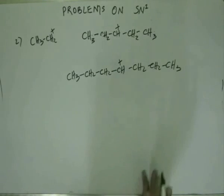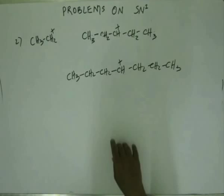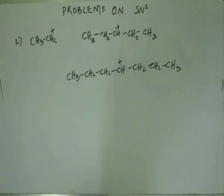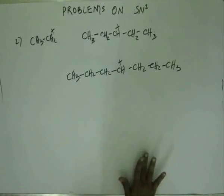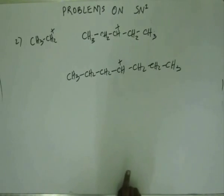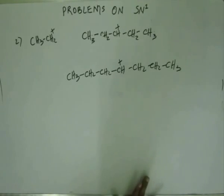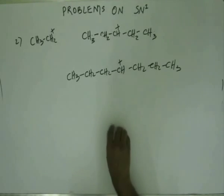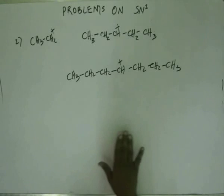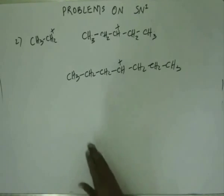Based upon the stability of those 3 intermediates, you will decide the ease with which the RDS would be crossed. If you have a more stable intermediate, then the energy level of that intermediate is lower, and that lower energy level can be crossed more easily. So, in nutshell, if you get the most stable intermediate, that will give us the highest rate of reaction. So, if we arrange them in the order of stability, that also gives us the order of rate of reaction. Let's decide upon the order of stability.